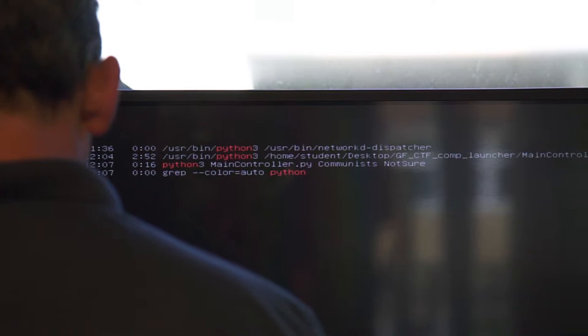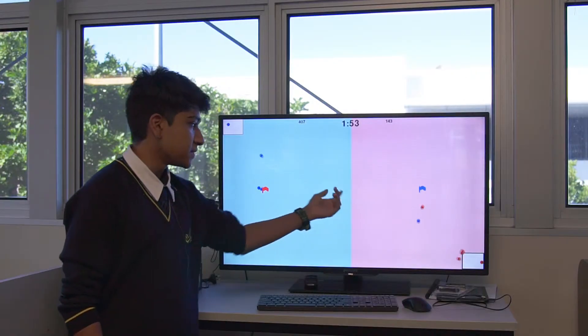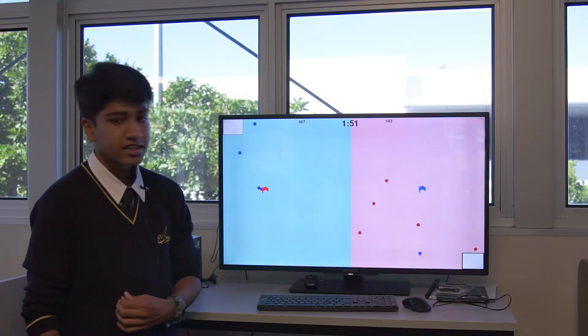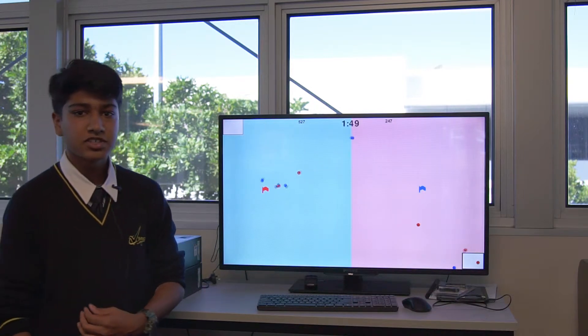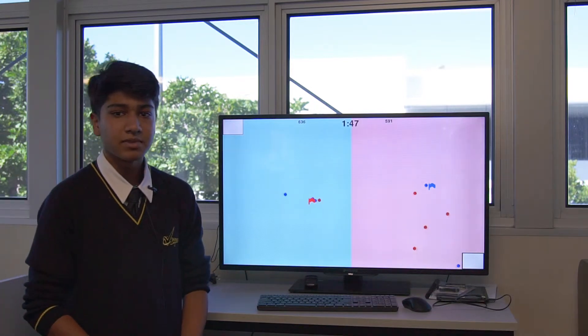These points are determined by the amount of time spent in the opposition's half. If you have the flag, the number of points you obtain are multiplied by 10.